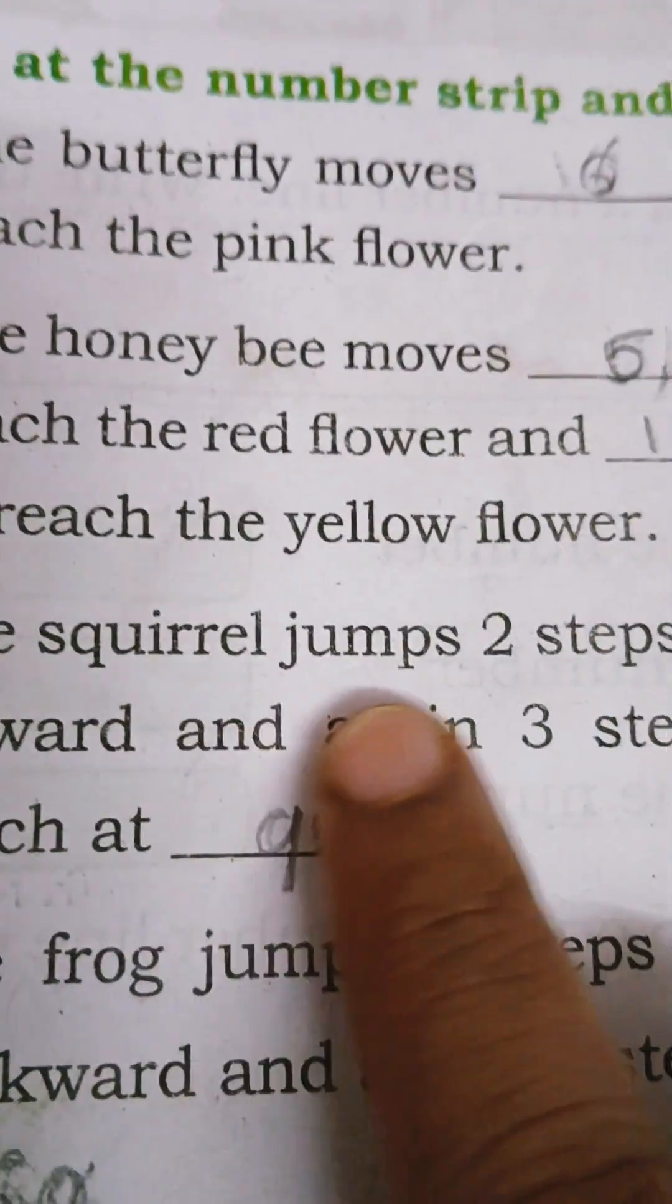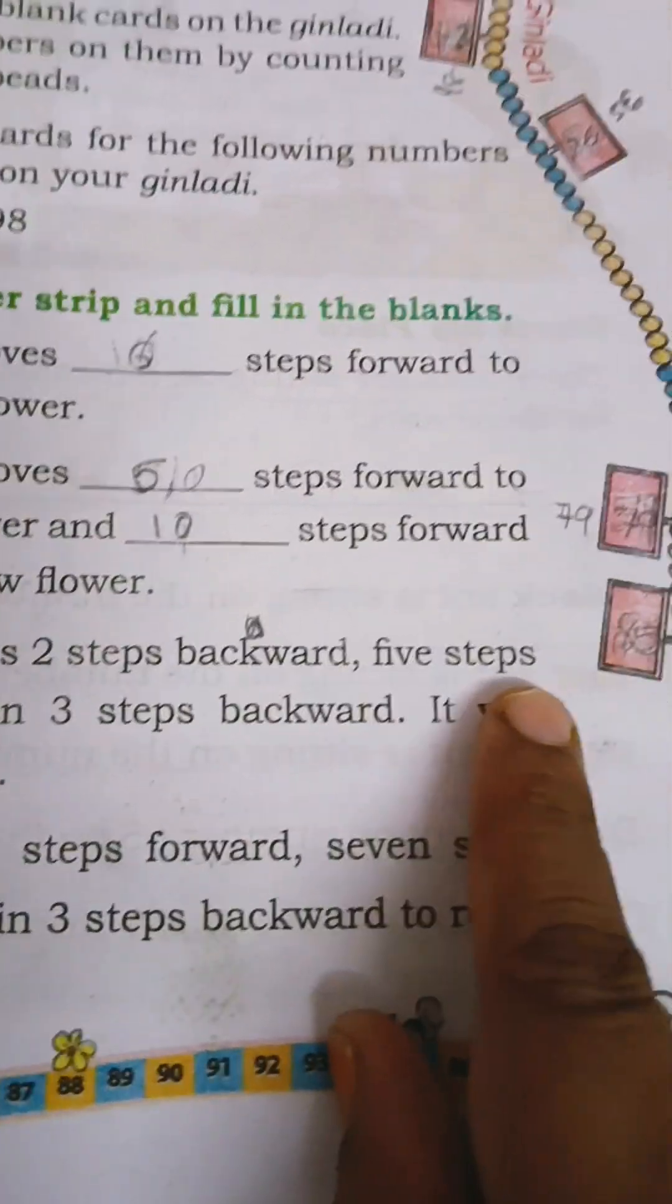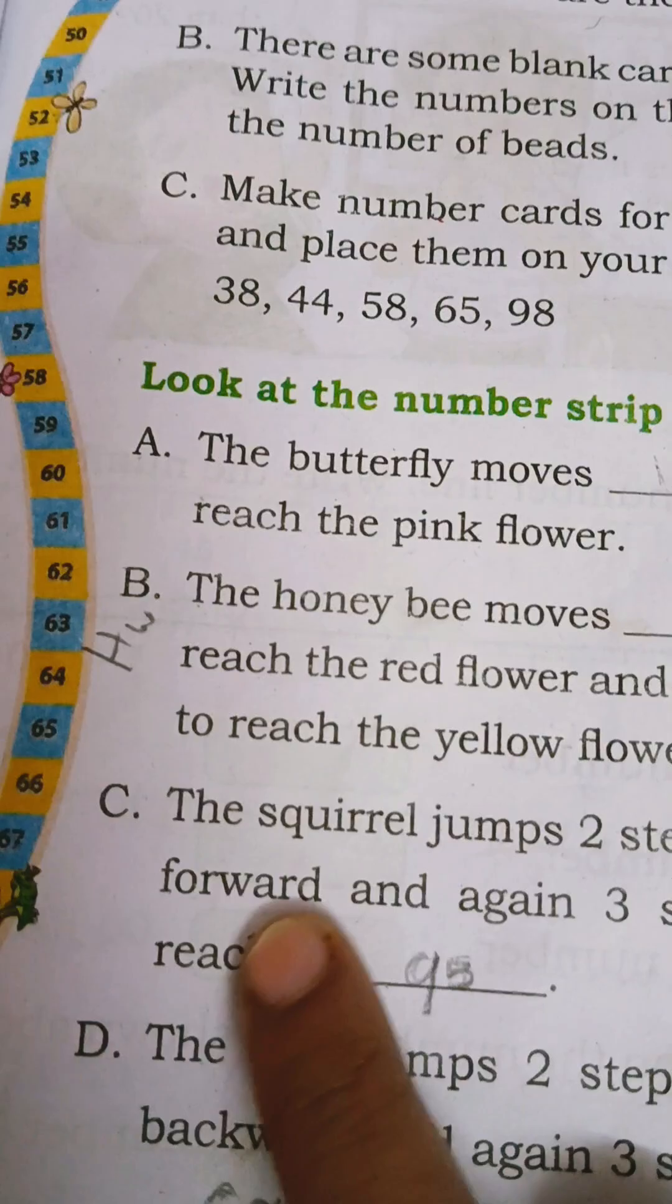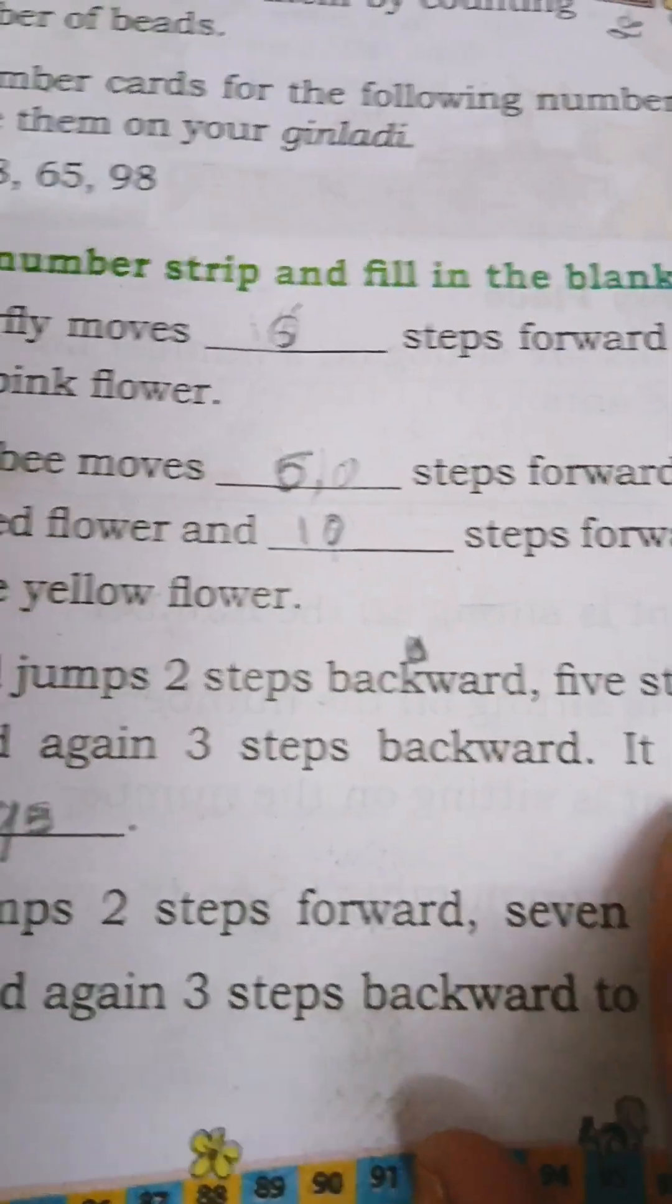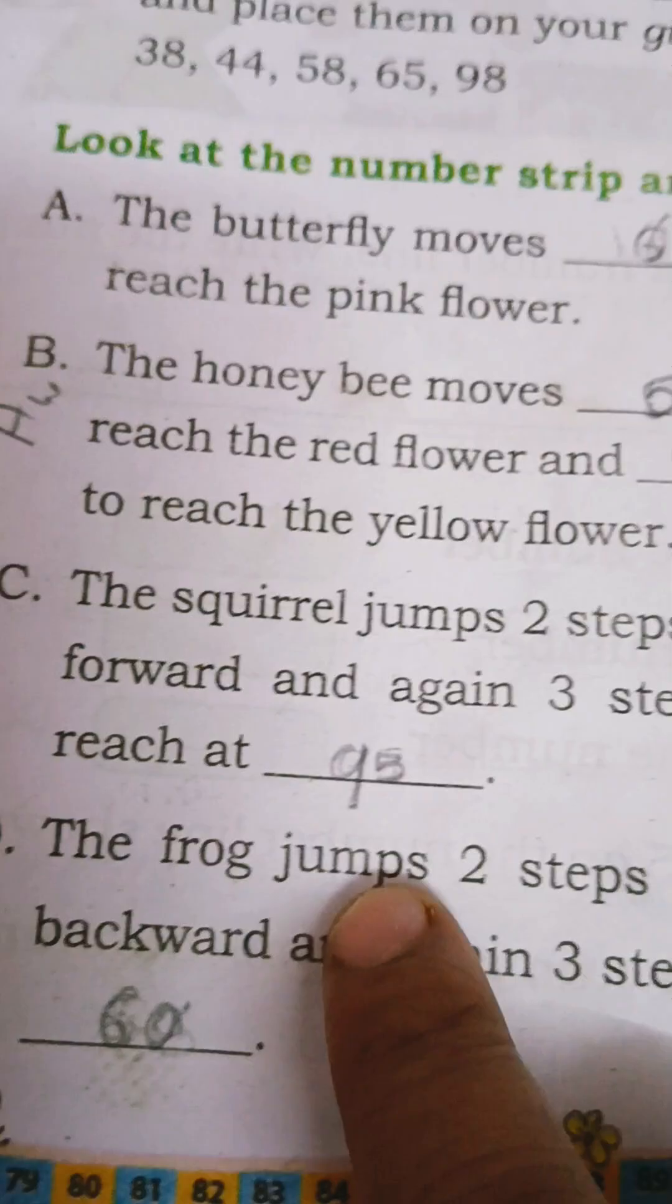The squirrel jumps 2 steps backward, 2 steps backward, and 5 steps forward, and again 3 steps backward. It will be at 95.